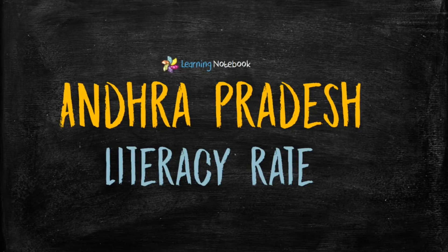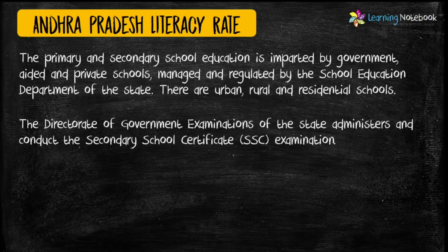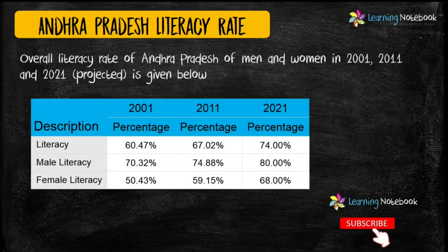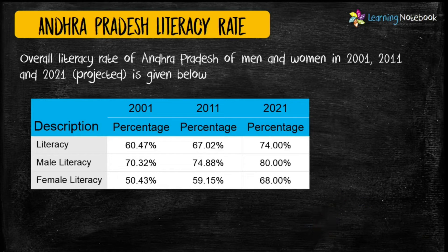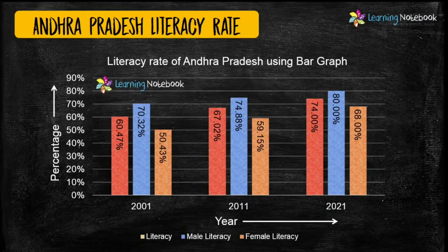The next topic for your Maths Art Integrated Project is the literacy rate of Andhra Pradesh. Here we have used a triple bar graph to show the overall literacy rate, male literacy rate, and female literacy rate of Andhra Pradesh.